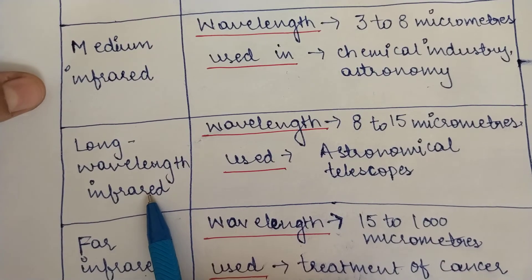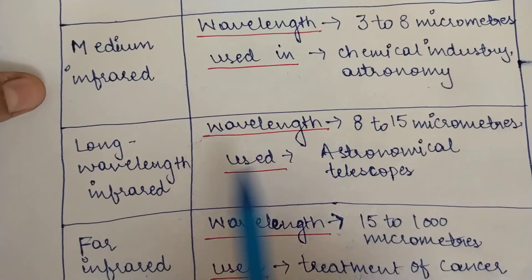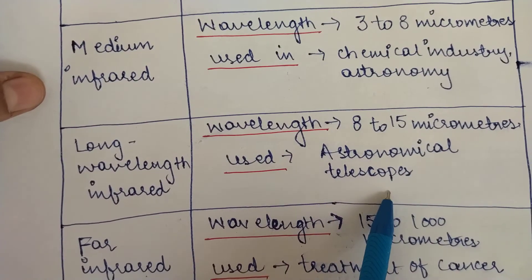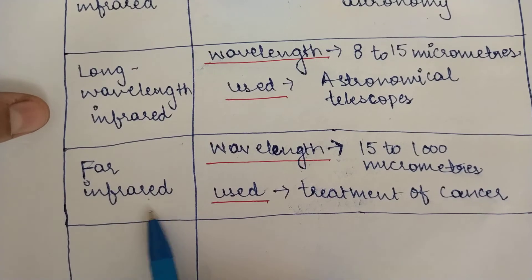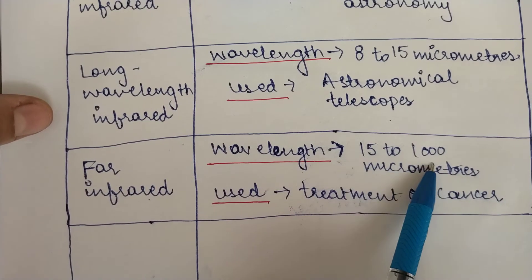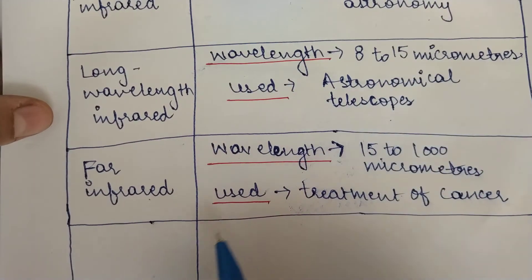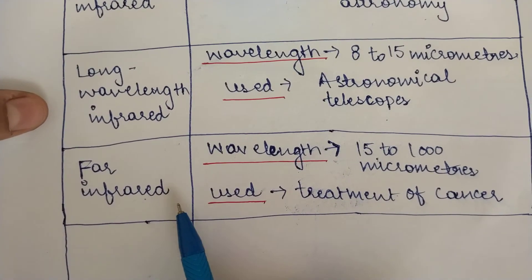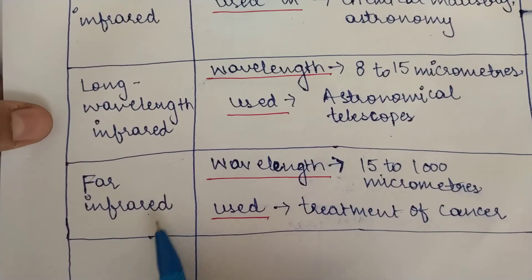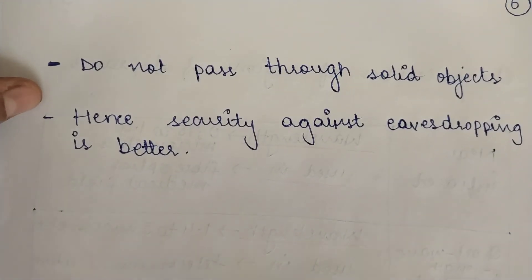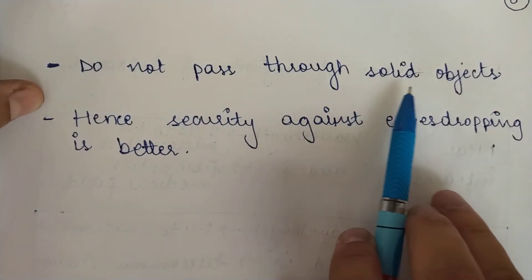The fourth is long wavelength infrared, with a wavelength between 8 to 15 micrometers, used for astronomical telescopes. The fifth is far infrared, with a wavelength between 15 to 1000 micrometers. Far infrared waves are used for the treatment of cancer — the infrared waves used in chemotherapy fall into this category.